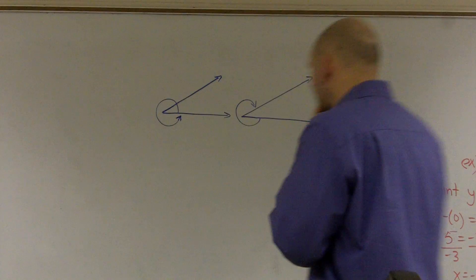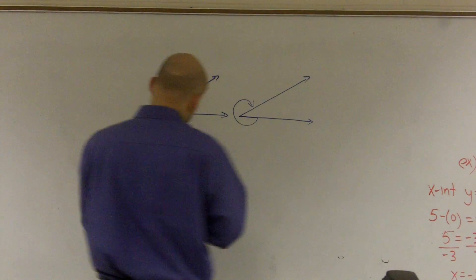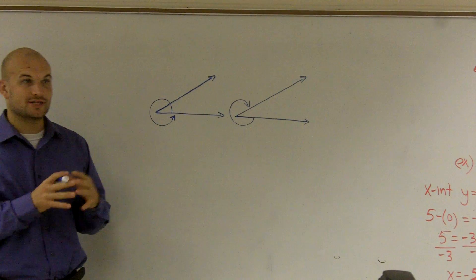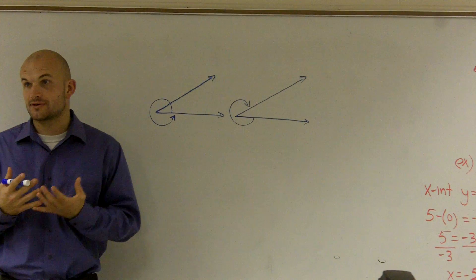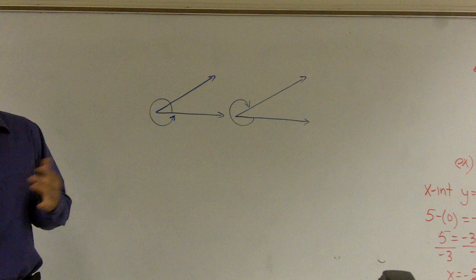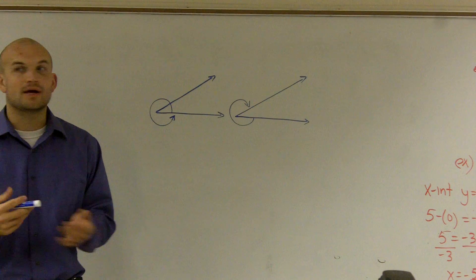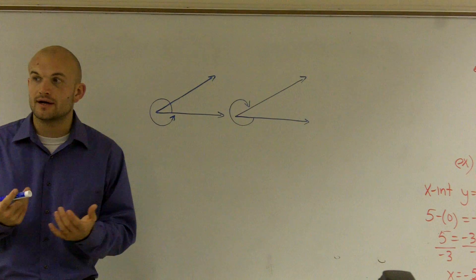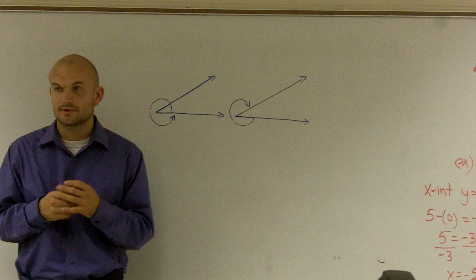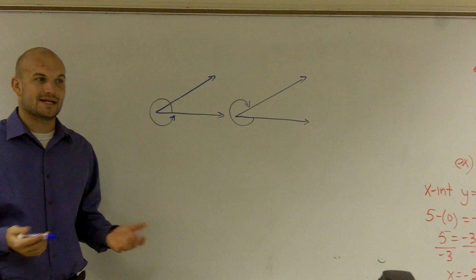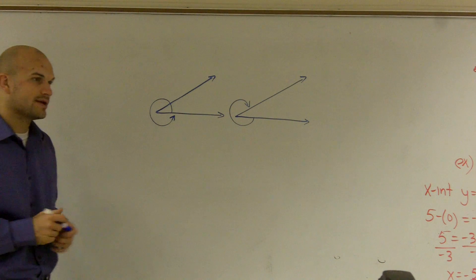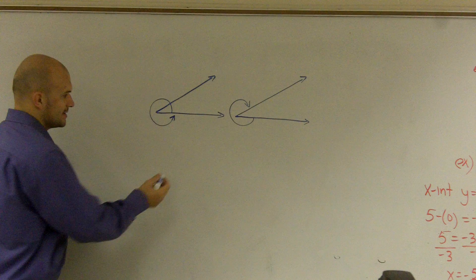What they want us to do for this problem is estimate our angle to the nearest radian. So we're going to find the value of the angle. You guys have probably been used to finding the measure of angles in degrees. What we're going to do now is measure it in radians. So the first thing we need to talk about is how are we going to figure out what a radian is?